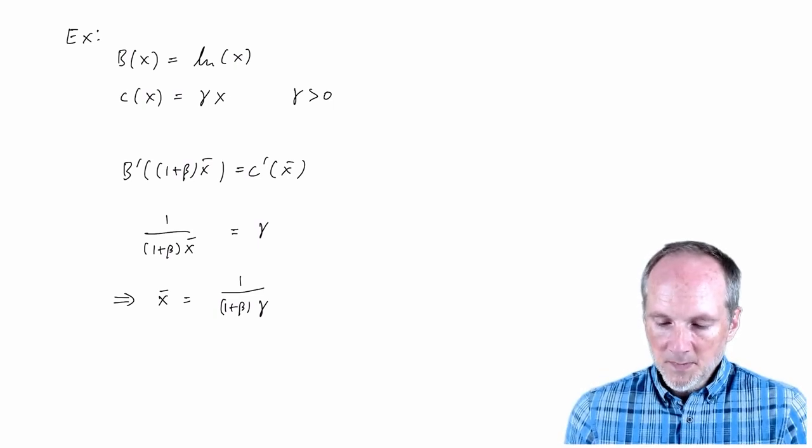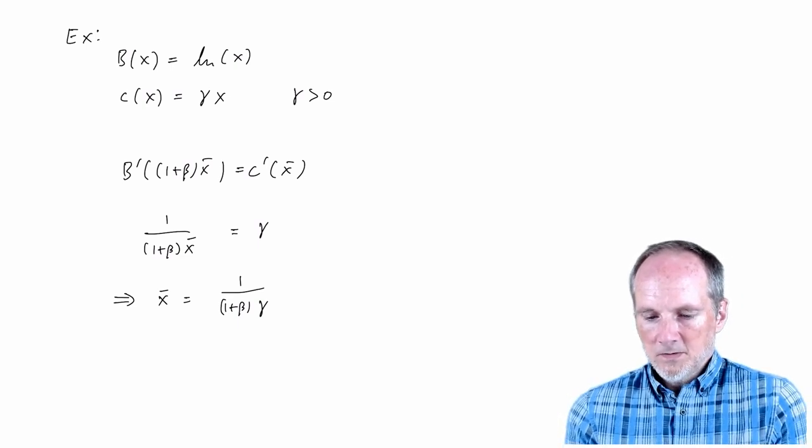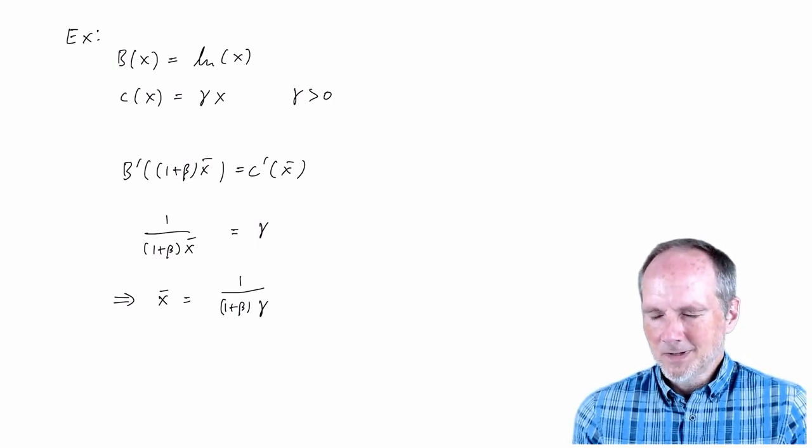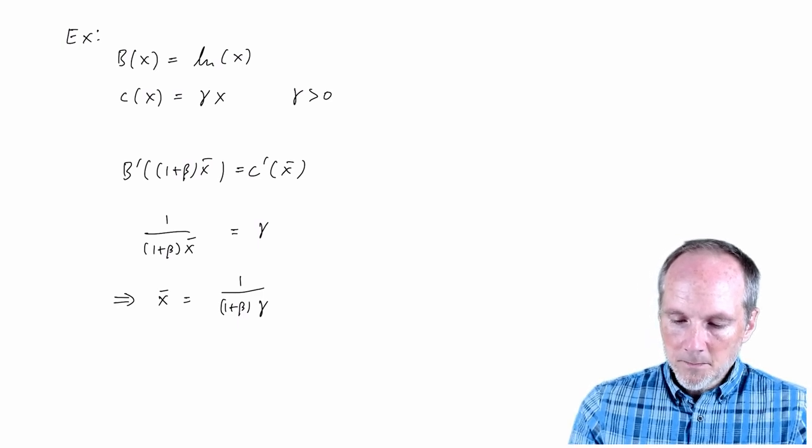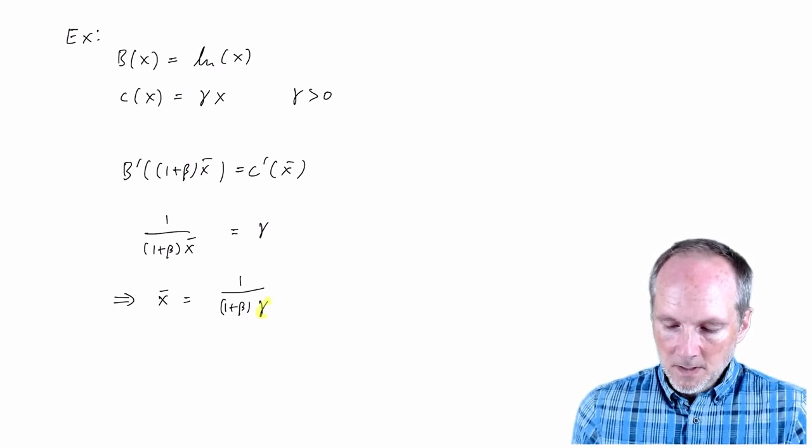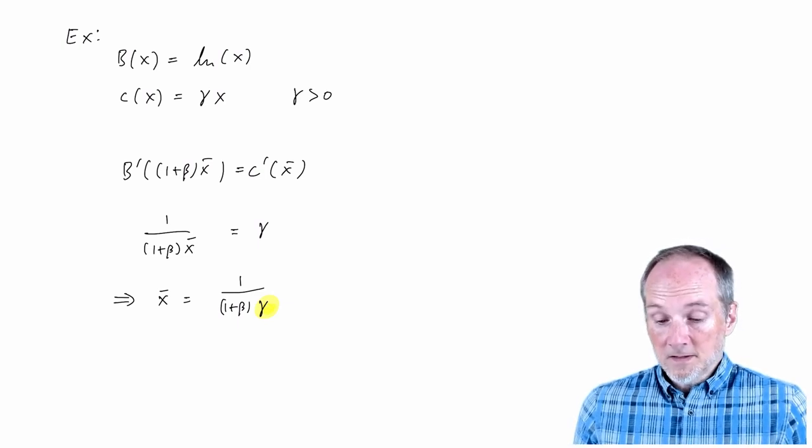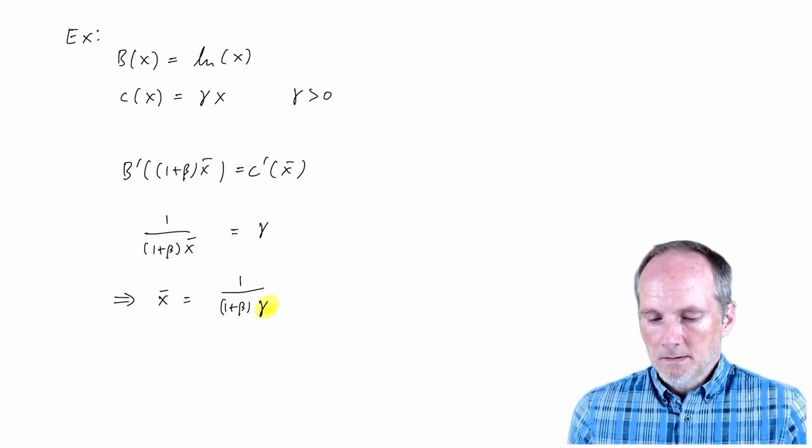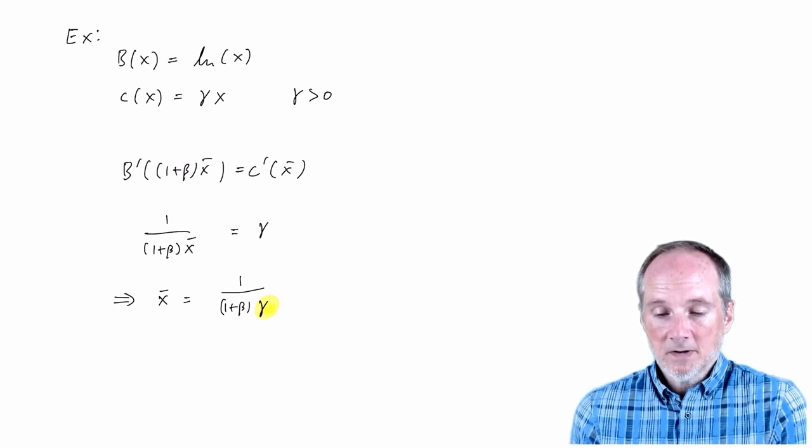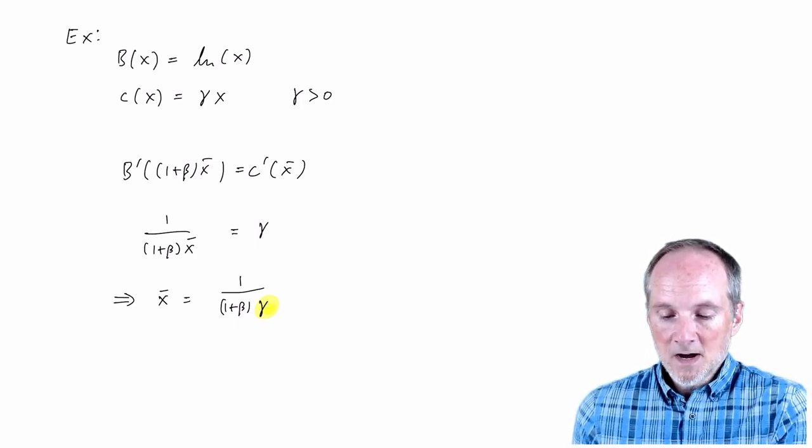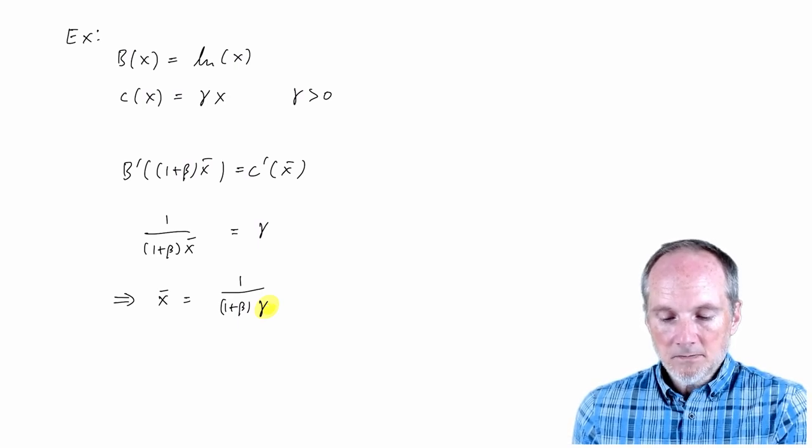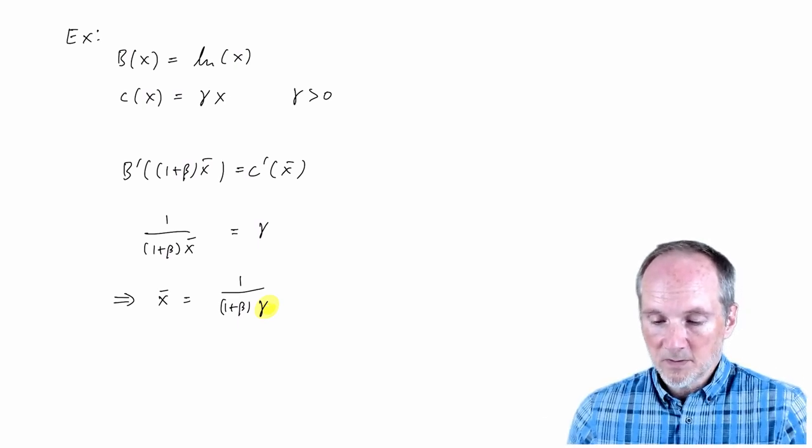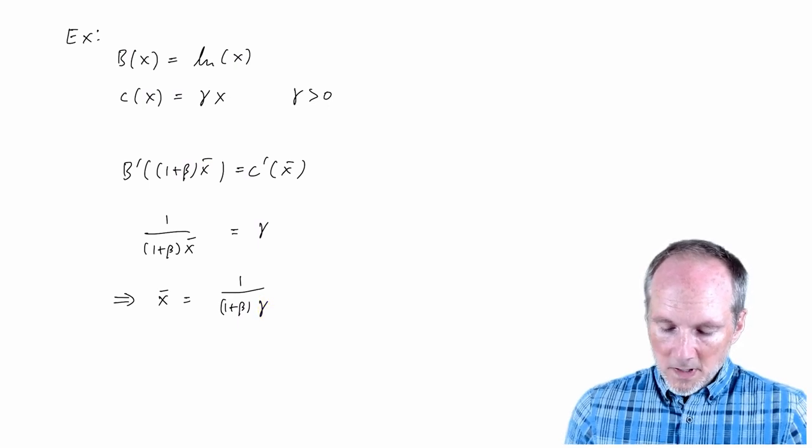So simple solution. It's always a good idea to, when you derive something like this, just go back and play around with it, make sure it does what it should or what it feels like it should do. So notice if we increase gamma, then we're making the denominator bigger, so x bar, this equilibrium activity level is going to go down. That's intuitive. As this cost parameter gets higher, effort becomes more costly. And yeah, makes sense that if effort is more costly we'll do less of it in equilibrium.